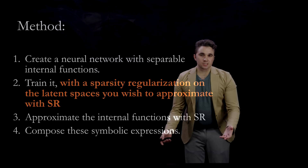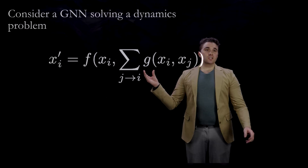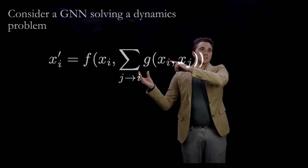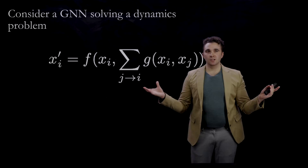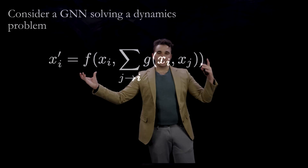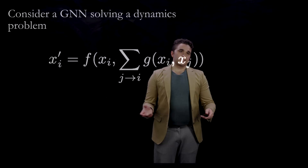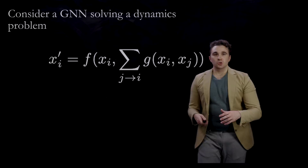Consider a graph neural network with a single message-passing step. Function g — maybe a multi-layer perceptron — takes the sending and receiving nodes as inputs and outputs a message. You sum-pool those messages for the receiving node, then pass that into a second function mapping to a new node state. You regularize g to have a low-dimensional input and output space during training, making symbolic regression straightforward to apply.